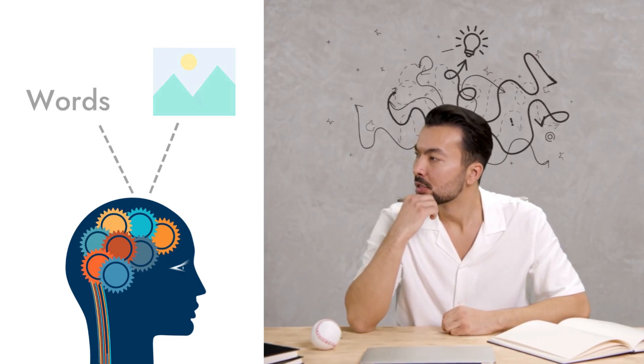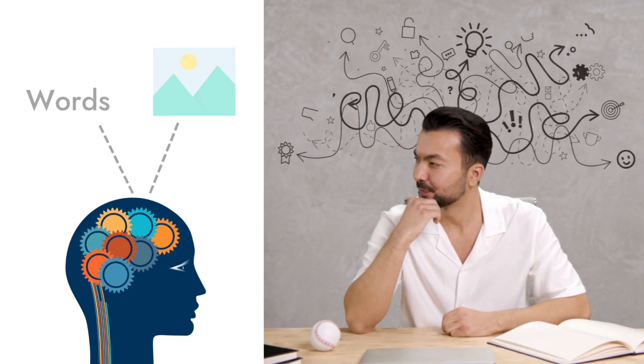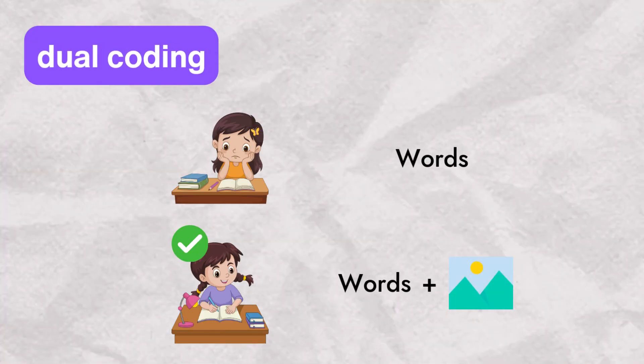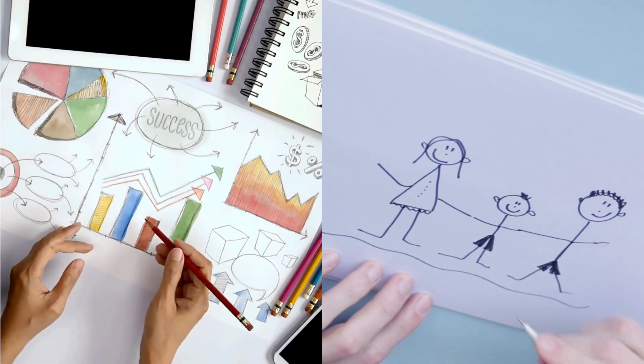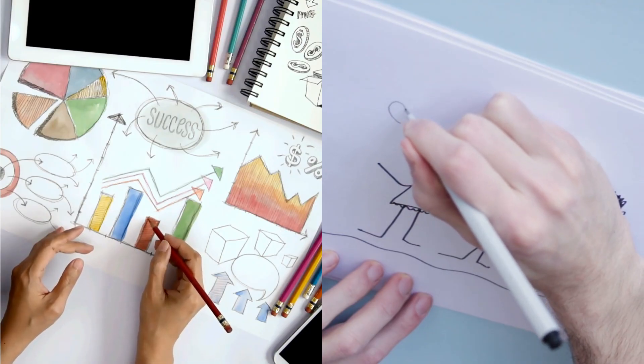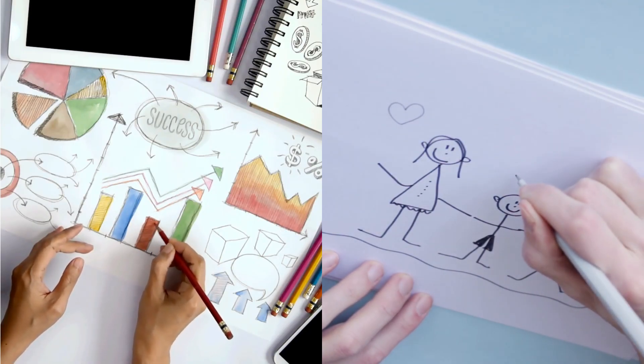That means if you forget one, the other can cue your memory. Research shows that students who used dual coding remembered more, understood concepts faster, and performed better on later tests. Even simple drawings like stick figures or arrows are enough. The visuals don't have to be beautiful to be effective.